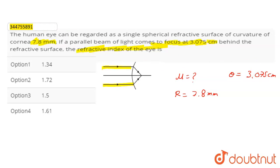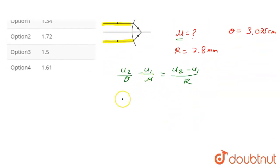This is the formula we use: mu2 upon v minus mu1 upon u equals mu2 minus mu1 upon r. This is the formula for refractive index.